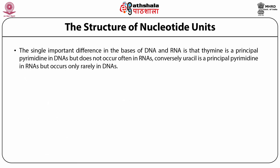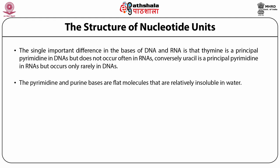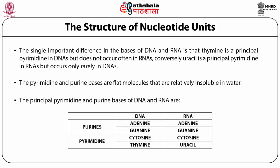The single important difference in the bases of DNA and RNA is that thymine is a principal pyrimidine in DNA but does not occur often in RNA. Conversely, uracil is a principal pyrimidine in RNA but occurs only rarely in DNA. The pyrimidine and purine bases are flat molecules that are relatively insoluble in water. The principal pyrimidine and purine bases of DNA and RNA are tabulated, distinguishing between purines and pyrimidines in each.